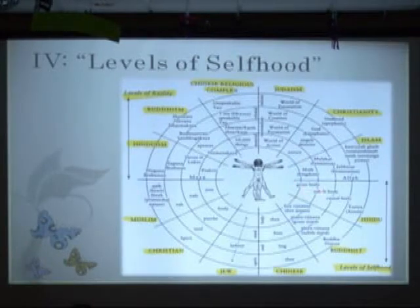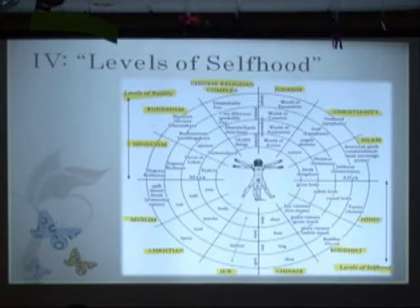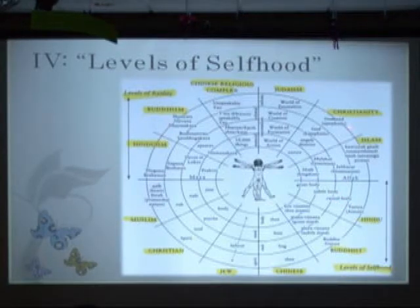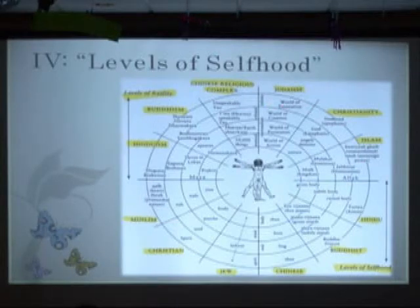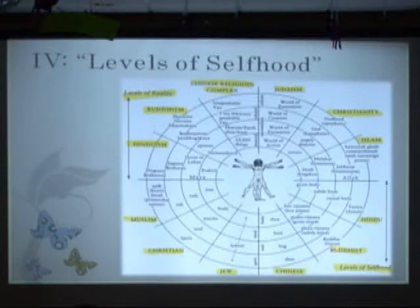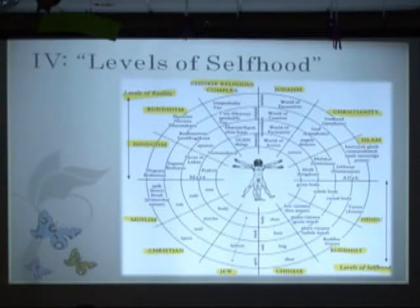We do this just for pointing out purposes, but you can see a progression here: gross body, subtle, causal. This outside ring is really the most inclusive layer of reality and self. You see words like Atman, Buddha nature, Shen, spirit with a capital S, and on and on.